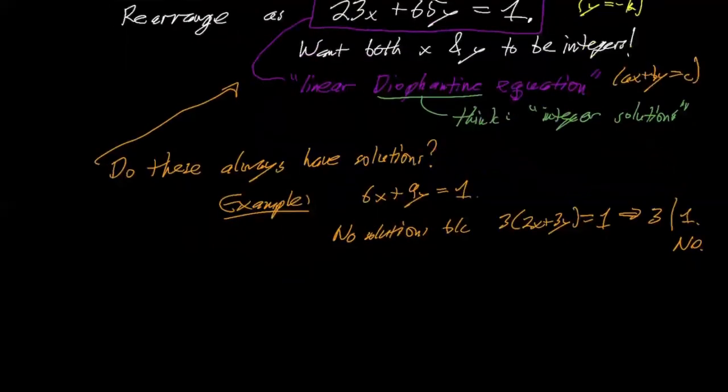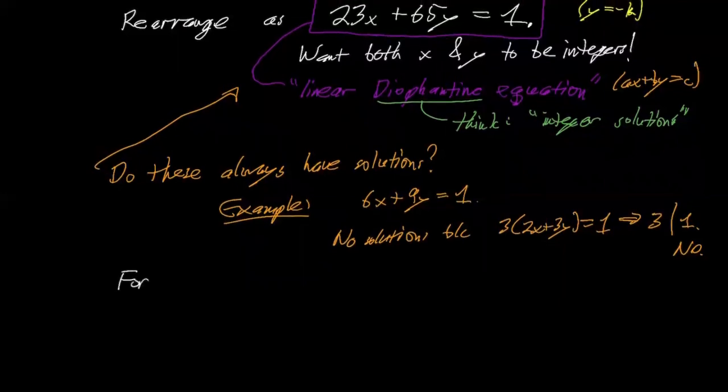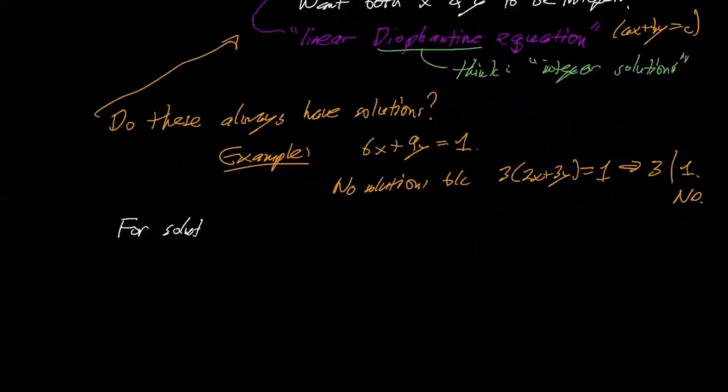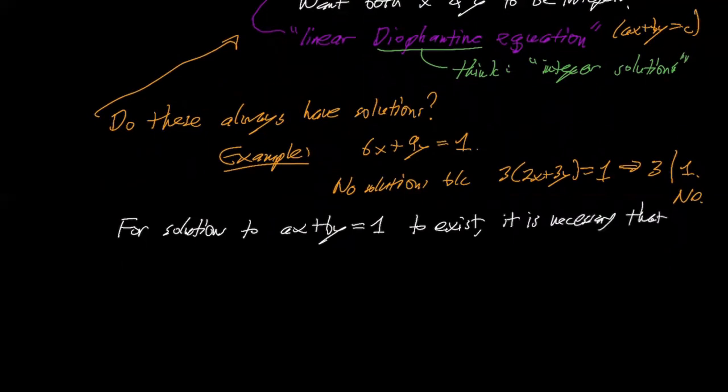So basically, if you want to have a solution, in particular to ax plus by equals 1, for integer solutions to exist, it is necessary that A and B have no common divisors except plus or minus 1.